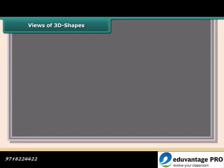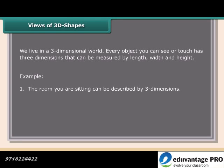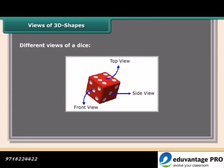We live in a three-dimensional world. Every object you can see or touch has three dimensions that can be measured by length, width, and height. For example, the room you are sitting in can be described by three dimensions, and the monitor you are looking at has three dimensions. A dice can be viewed from the side, top, and front.